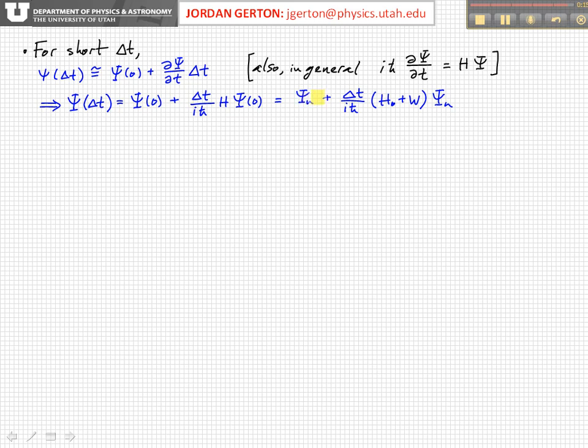And that is just, in that case, at that time, the wave function is in an eigenstate, so ψ₀, ψₙ, plus delta t over iℏ times the Hamiltonian acting on the initial state, which is H₀ plus W times ψ₀.